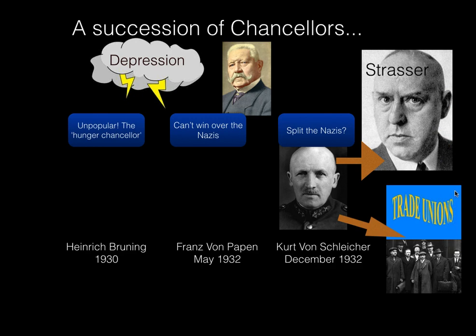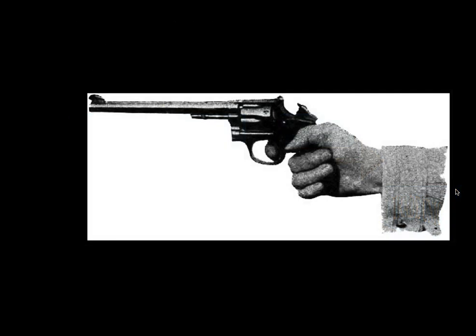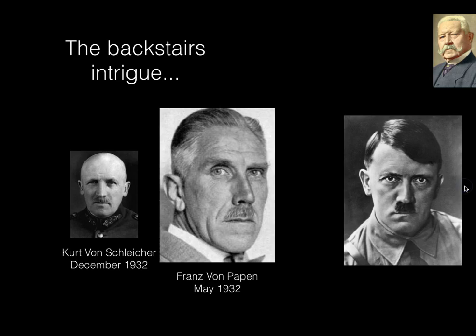Strasser approached Hitler, saying he had a chance to get in as a senior Nazi in government. Hitler wasn't overly pleased with this and told him no. Strasser would ultimately be executed — shot, murdered — in 1934 in the Night of the Long Knives. Not a good idea to get in Hitler's way. So the Backstairs Intrigue moves on.